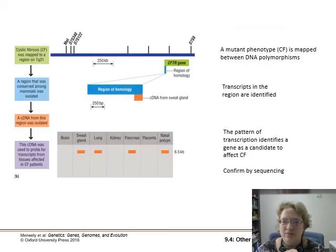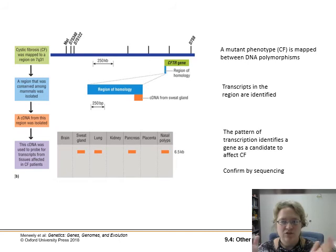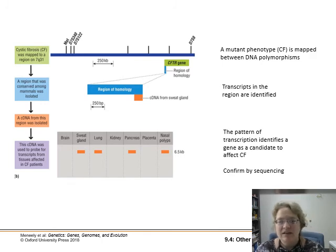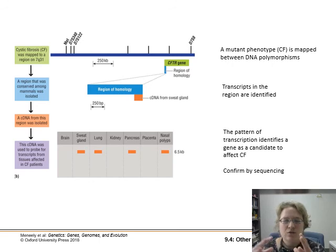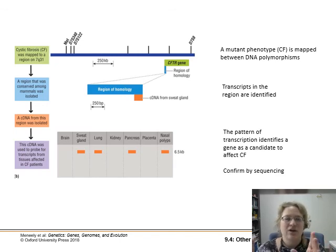Here's the example of cystic fibrosis, which was mapped this way. They knew it occurred on chromosome seven, and this particular region in between two genes seemed to always be assorting with it. They found this conserved area, isolated complementary DNA — taking RNA and making cDNA from it — and used that to probe for transcripts in tissues. They found a pattern of transcription of this gene because a certain gene product is made there. Once they knew they were in the right region, they confirmed it by sequencing. This was back when sequencing was very expensive; nowadays, we just sequence as much as we want and analyze the data after.